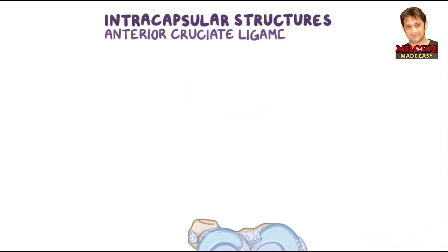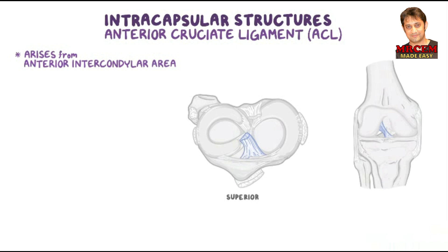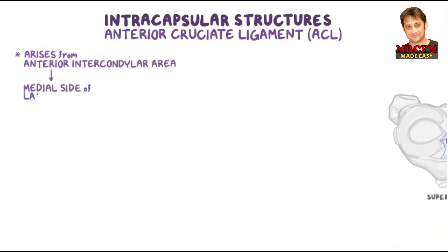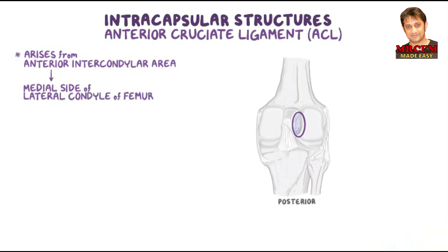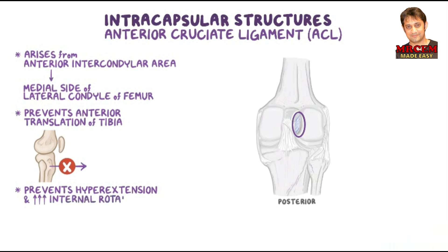The anterior cruciate ligament, or ACL, arises from the anterior intercondylar area of the tibia, posterior to the attachment of the medial meniscus. It extends superiorly, posteriorly, and laterally to attach to the posterior part of the medial side of the lateral condyle of the femur. The ACL serves to prevent anterior translation of the tibia relative to the femur, and also helps prevent hyperextension and excessive internal rotation of the knee.